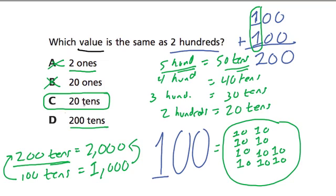But here they're not asking for two thousand. They're asking for two hundred. So D is out. All right, hope that helped.